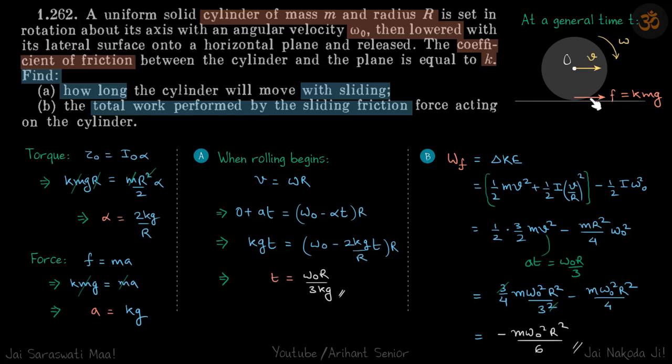It will be sliding friction with its maximum value, that is kmg. Because of this frictional force, the cylinder will start to move towards right and also its omega will start to reduce.